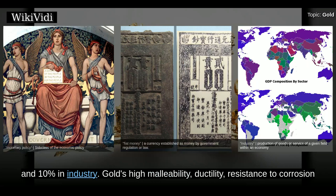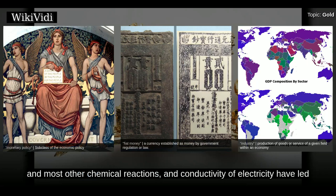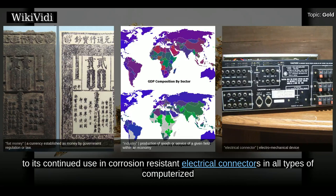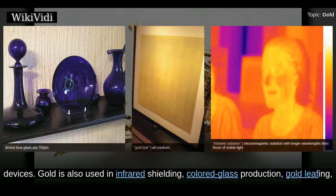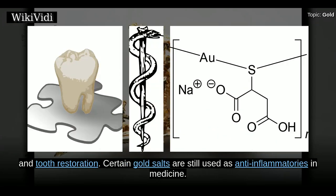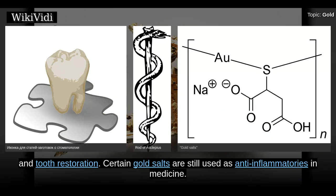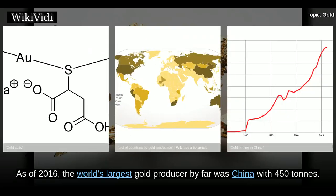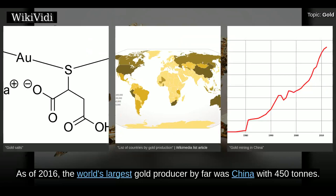Gold's high malleability, ductility, resistance to corrosion and most other chemical reactions, and conductivity of electricity have led to its continued use in corrosion-resistant electrical connectors in all types of computerized devices. Gold is also used in infrared shielding, colored glass production, gold leafing, and tooth restoration. Certain gold salts are still used as anti-inflammatories in medicine. As of 2016, the world's largest gold producer by far was China with 450 tons.